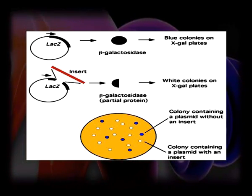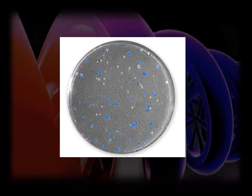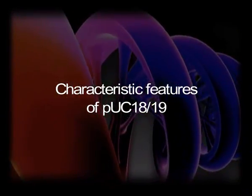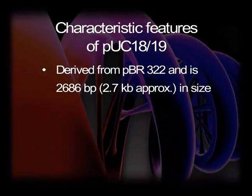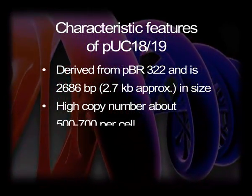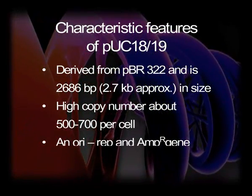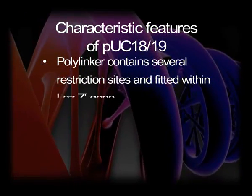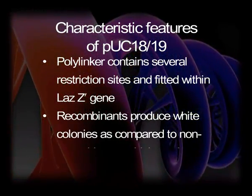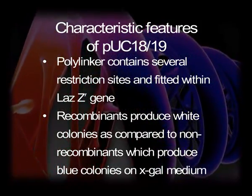The polylinker is present within the lacZ gene of the pUC vector so that insertion of a foreign gene will inactivate the lacZ gene. The recombinant bacteria will therefore produce white colonies against blue colonies in the case of non-recombinants. pUC vectors are always in pairs; in each pair the only difference is the orientation of the polylinker — examples are pUC18 and pUC19, similarly pUC118 and pUC119, etc. pUC18/19 is derived from pBR322 and is 2,686 base pairs (approximately 2.7 kilobases) in size, with high copy number of about 500 to 700 per cell, an origin of replication, ampicillin resistance gene, and a lacZ gene with polylinker. The polylinker is in different orientation in pUC18 and pUC19.